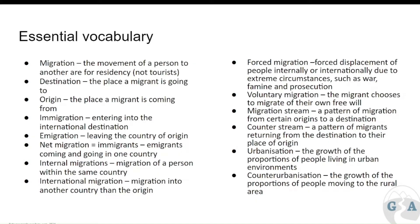We have forced migration, where people are displaced forcefully — we're thinking war, famine, persecution, or natural disasters. Then there's voluntary migration, where people move of their own free will. Right now in the world, voluntary migration is often for economic reasons, and forced migration is often due to wars and persecution. A migration stream is when a lot of people come from one origin and are generally moving towards the same destination.